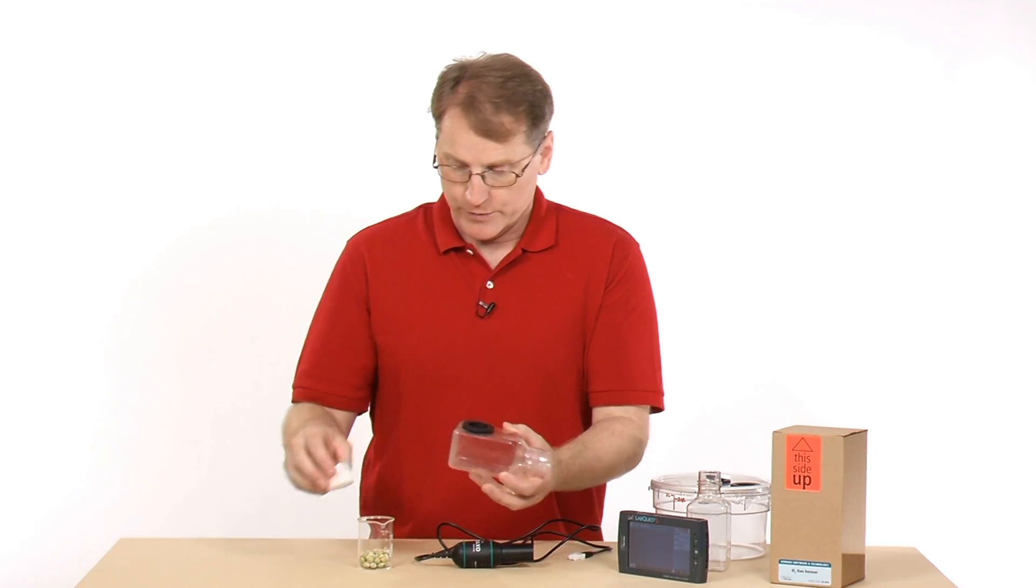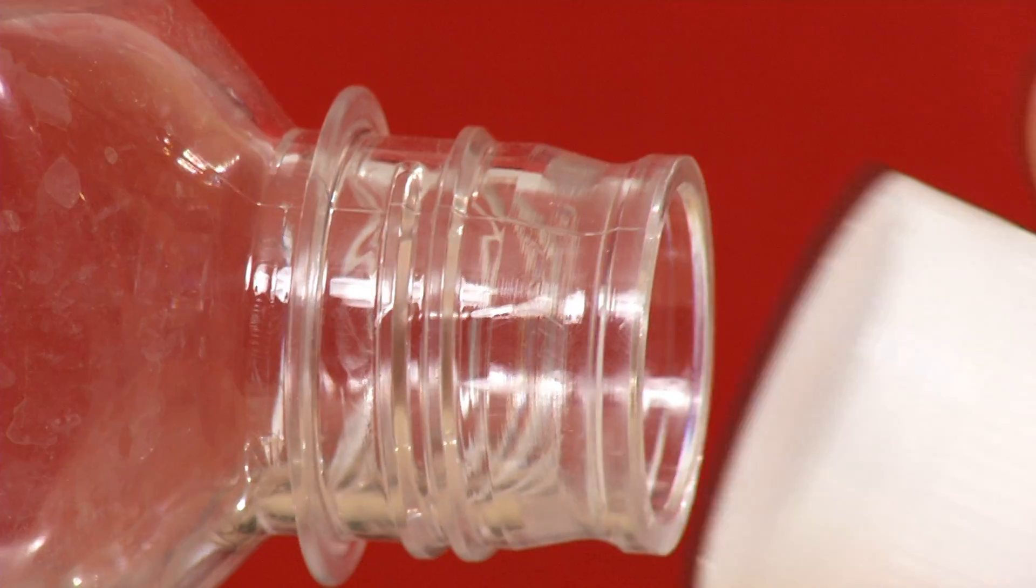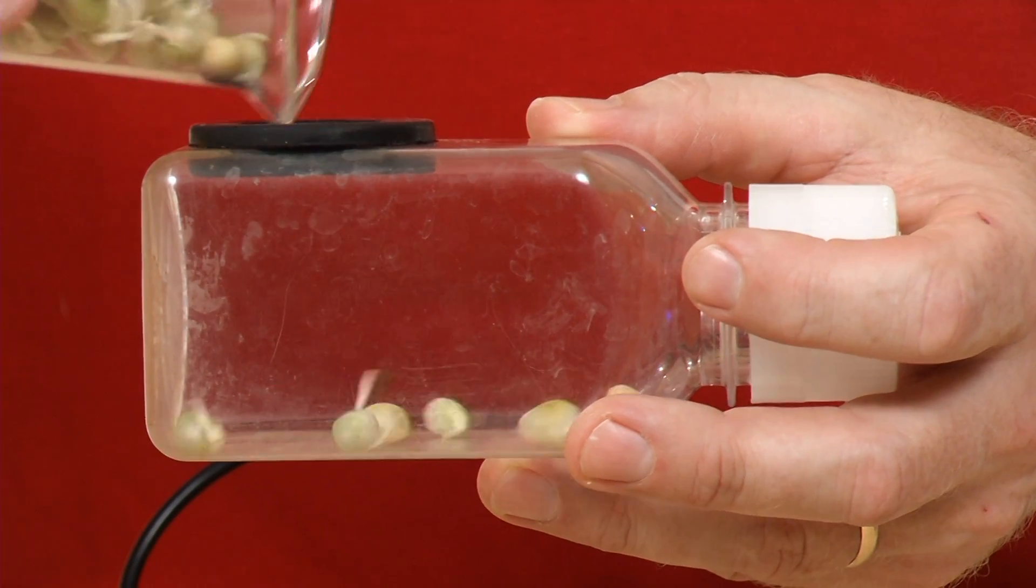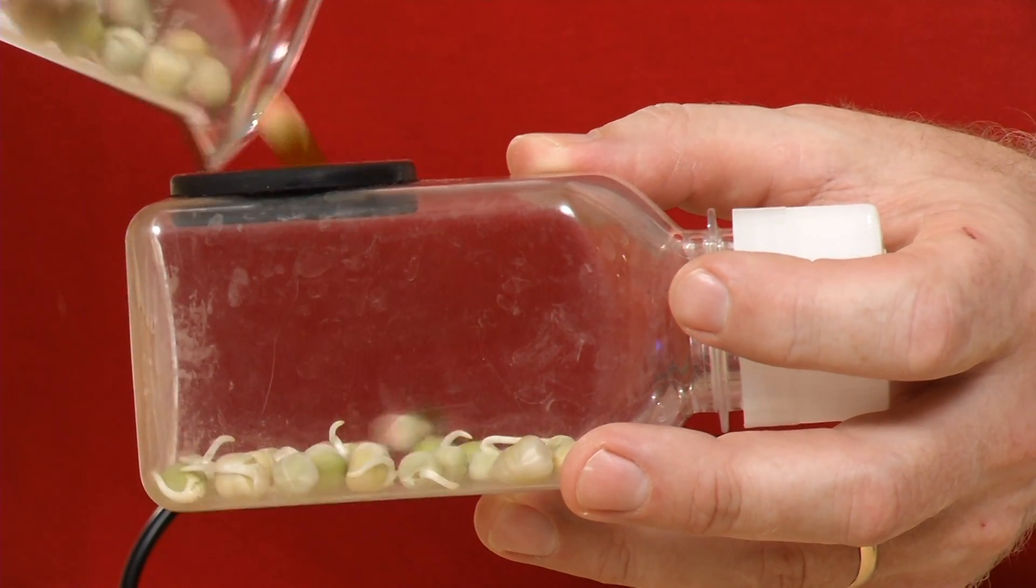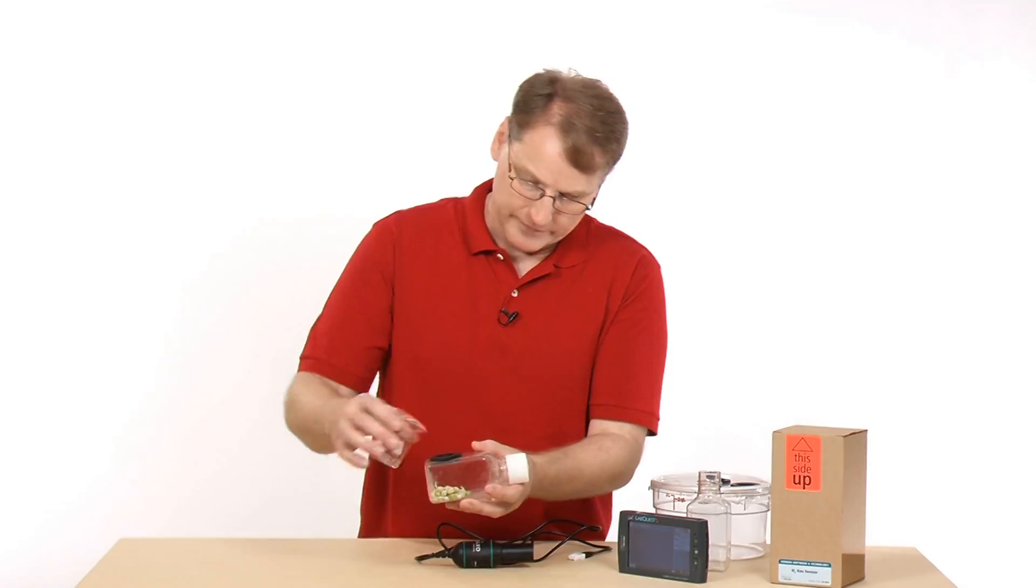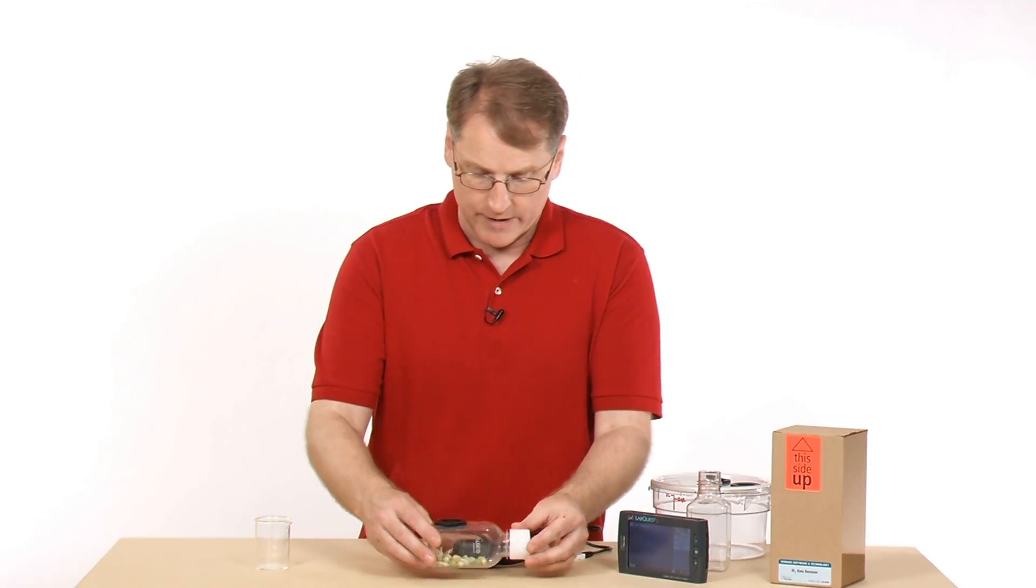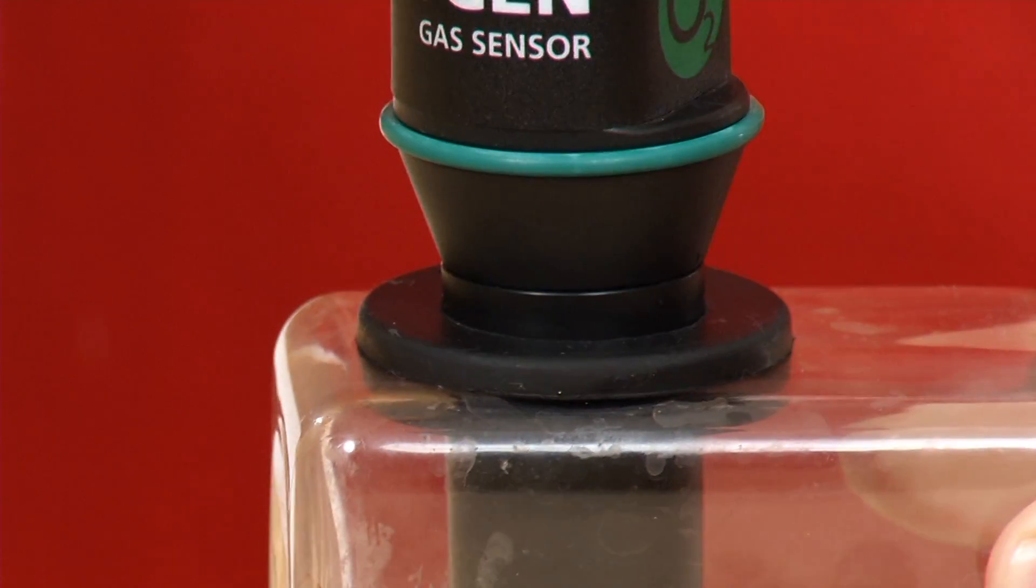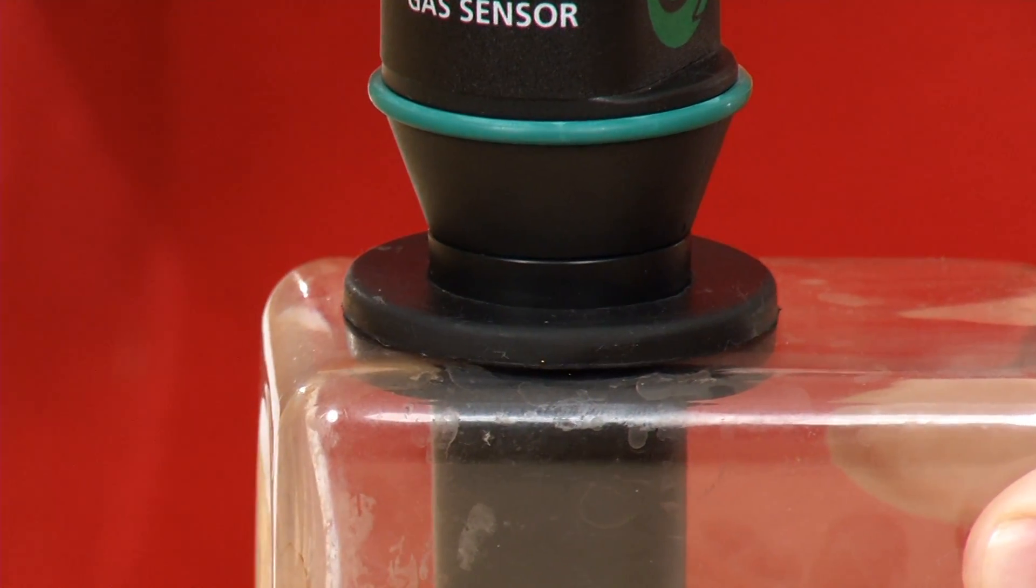So to do this, I'm going to put the lid on this one. And then I will put the peas inside the bottle. There we go. And I will put the oxygen sensor down into there, like that.